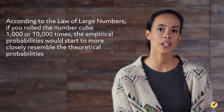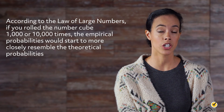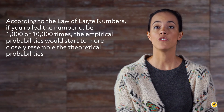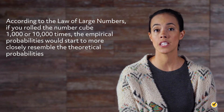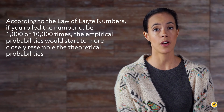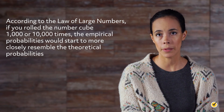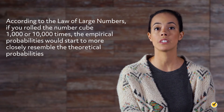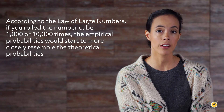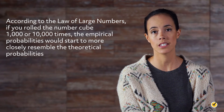Of course, according to the law of large numbers, if you rolled the number cube one thousand or ten thousand times, the empirical probabilities would start to more closely resemble the theoretical probabilities.